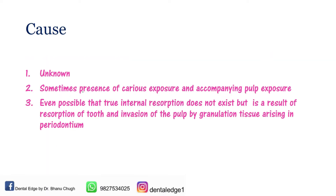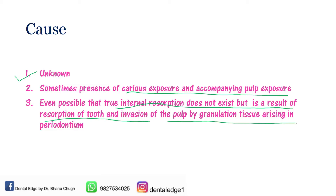The cause of this resorption is unknown. Sometimes presence of carious exposure and accompanying pulp exposure may be there. It is even possible that true internal resorption does not exist, but occurs as a result of invasion of pulp and granulation tissue arising in the periodontium. But overall, the cause is unknown.